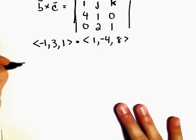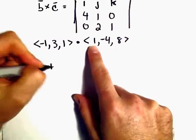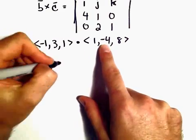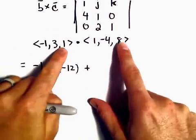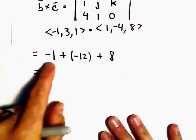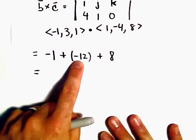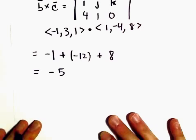So we can do this. -1 times 1 will be -1. We'll add 3 times -4, which is -12. And then we'll add 1 times 8, which is going to be 8. So it looks like we get -1 plus -12, which is -13, plus 8. That's going to leave us with the value -5.